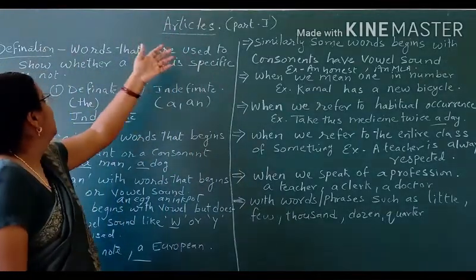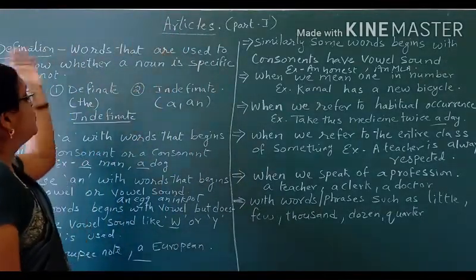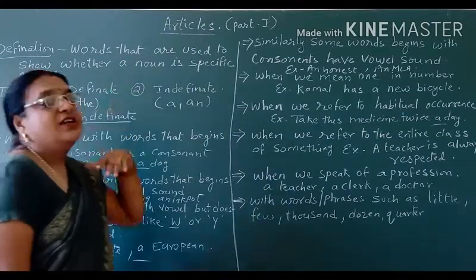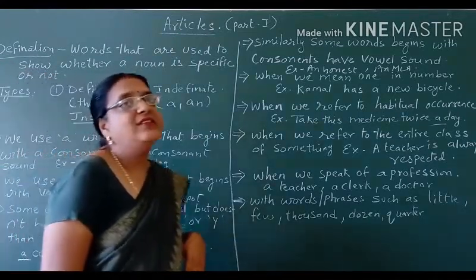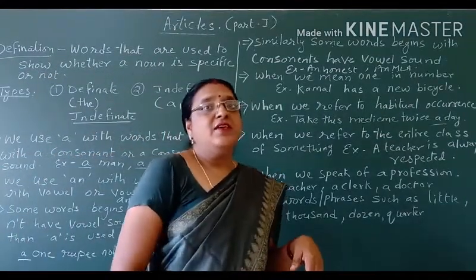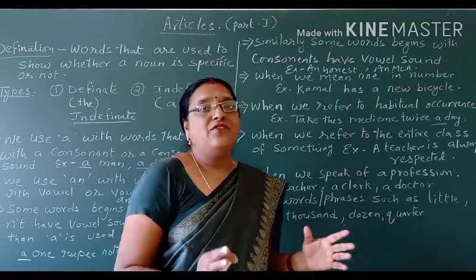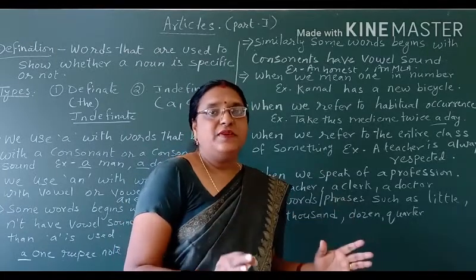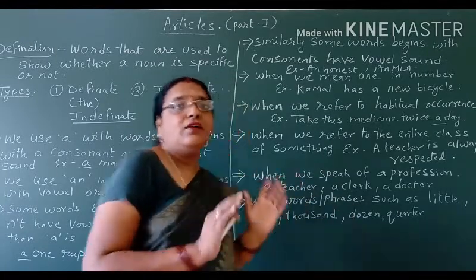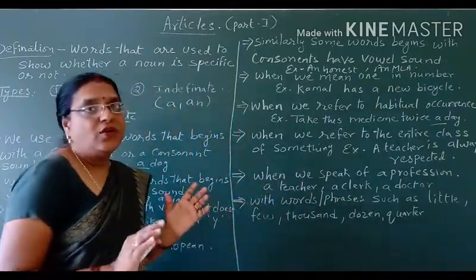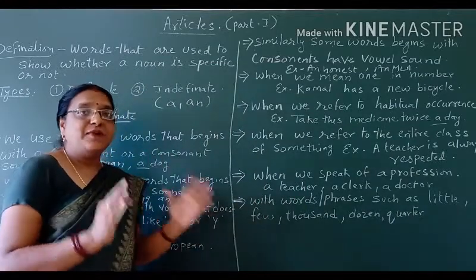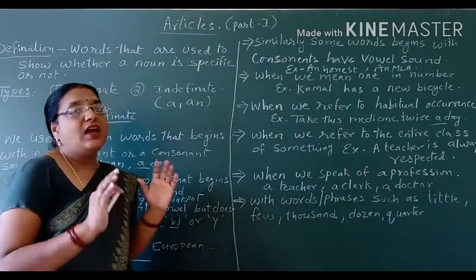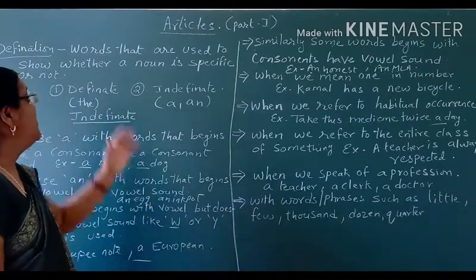Words that are used to show whether a noun is specific or not are known as articles. That means we have to identify whether a noun is specific or not. The words which specify the noun are known as adjectives.